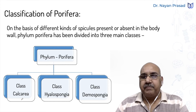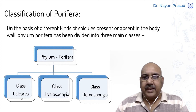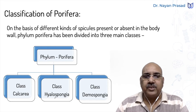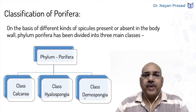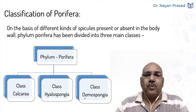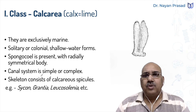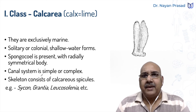The three classes are: Class Calcarea, Class Hyalospongia, and Class Demospongia. We have to see their characters one by one in detail. Let us talk about Class Calcarea.